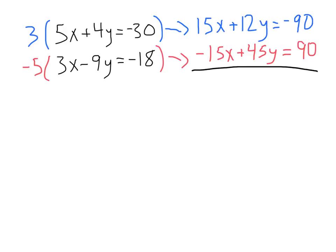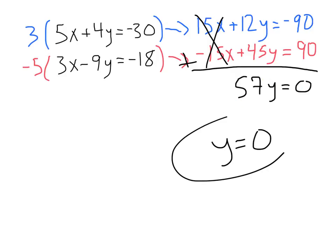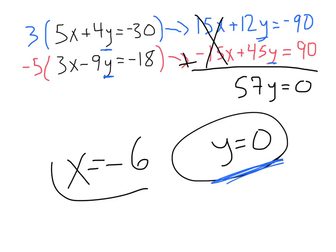Then, we see if we add these together, negative 15x and the 15x, boom, cancel out. We add these, giving us 57y equals 0, and a y value of 0. 0 divided by 57 is 0. Now, we can take this y value of 0, plug it in for any of our equations. Solving for x, we're going to get x equals negative 6. We'll have x equals negative 6, and y equals 0. Again, you've got to plug that in and solve.